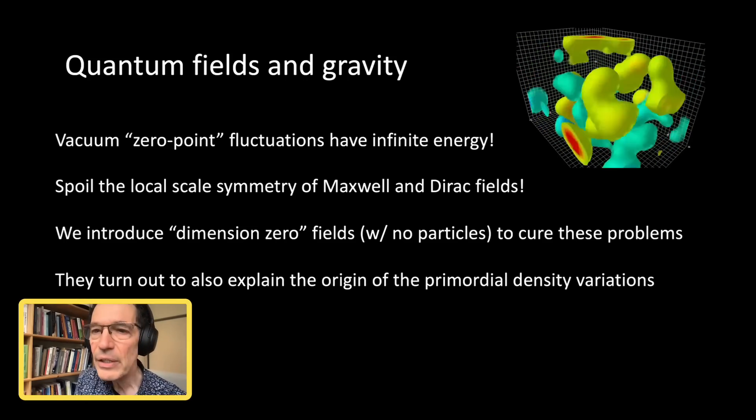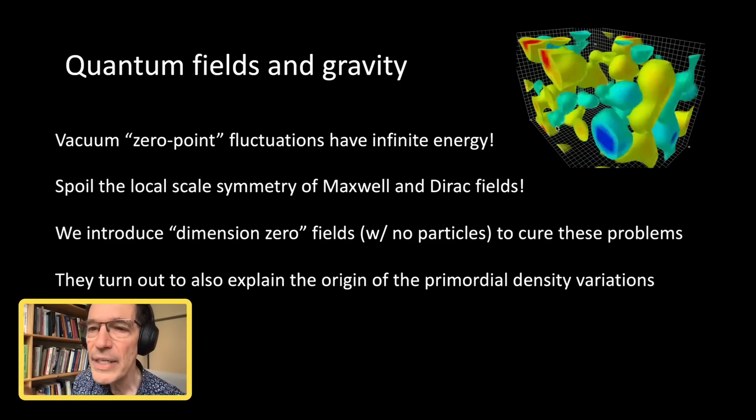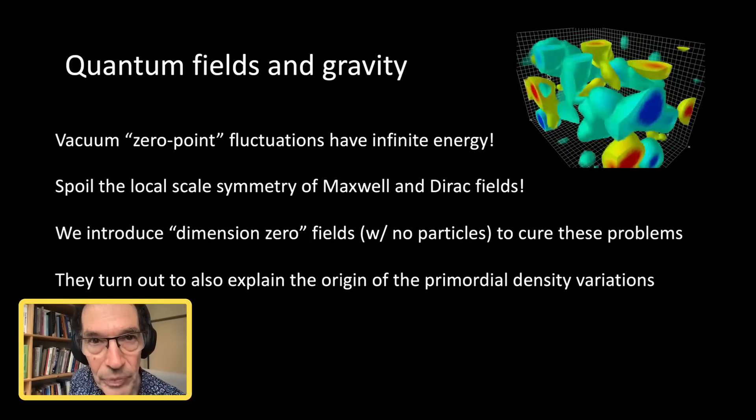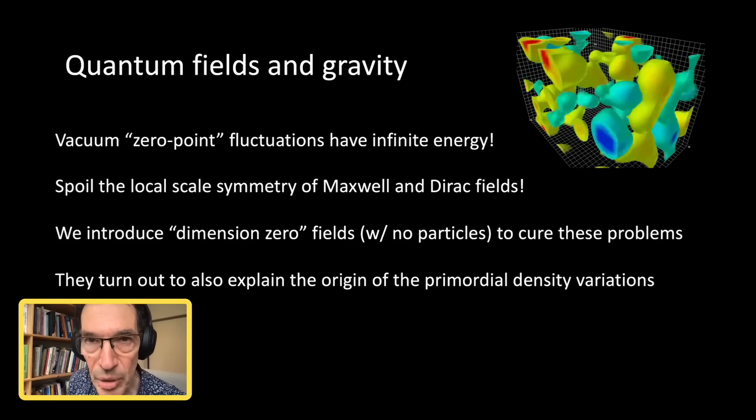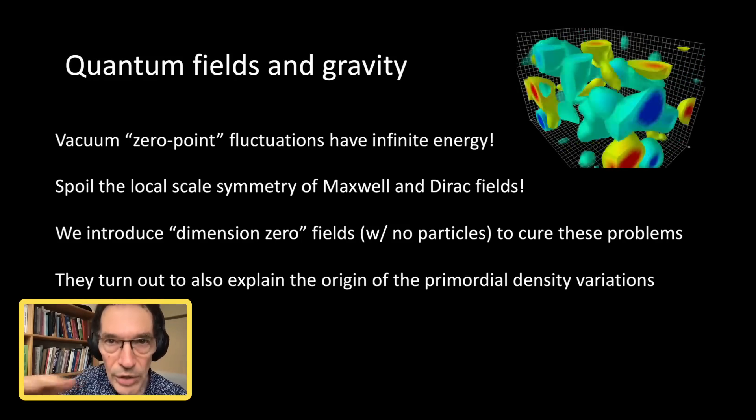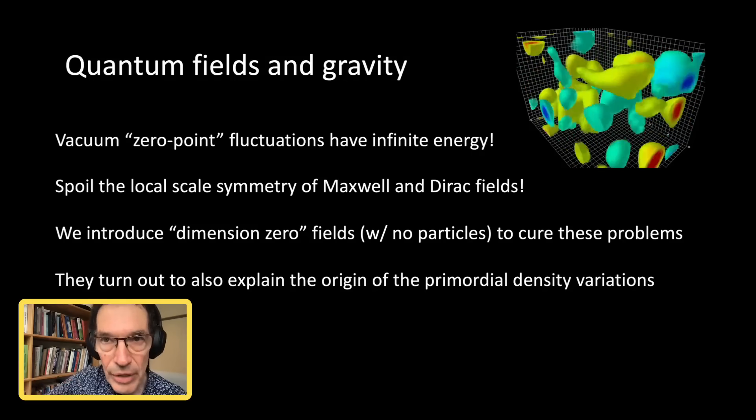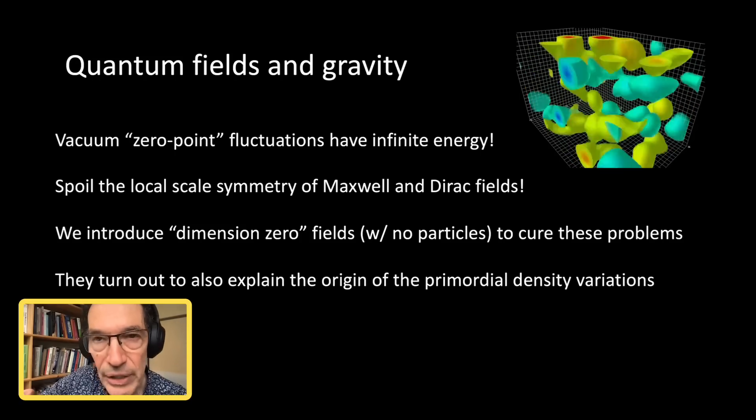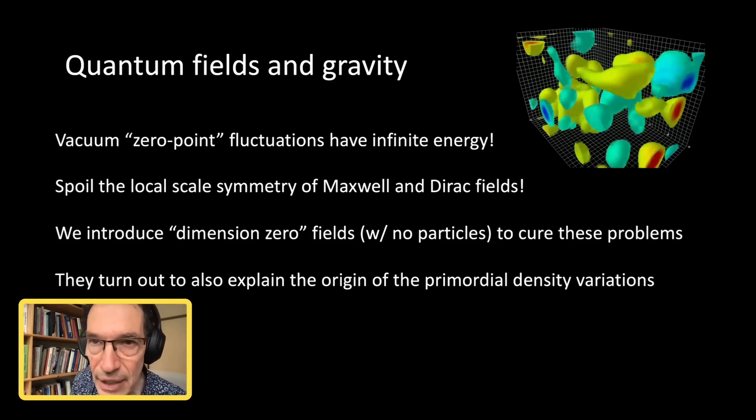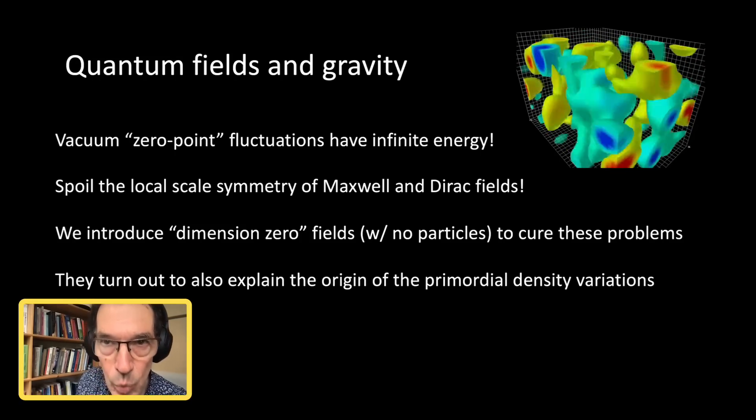These quantum fields look like the right-hand picture in the vacuum. And this is just a consequence of the Heisenberg uncertainty principle. You might want to set a field to zero and just say there's no electric or magnetic field in space. But this is inconsistent with quantum mechanics.